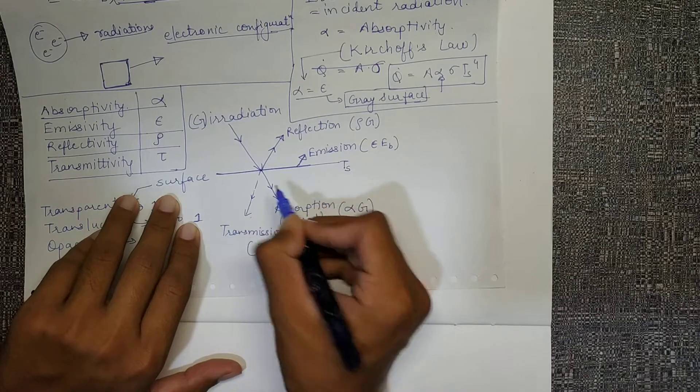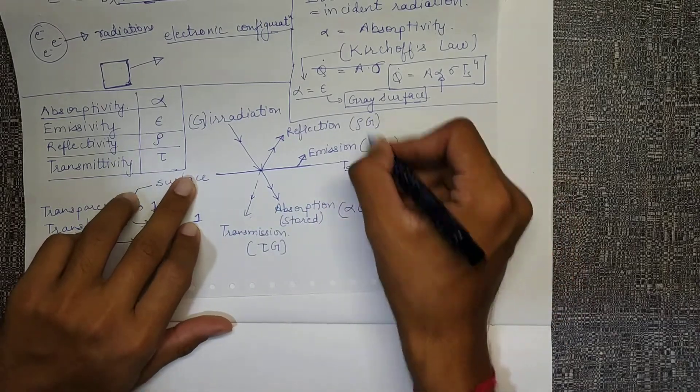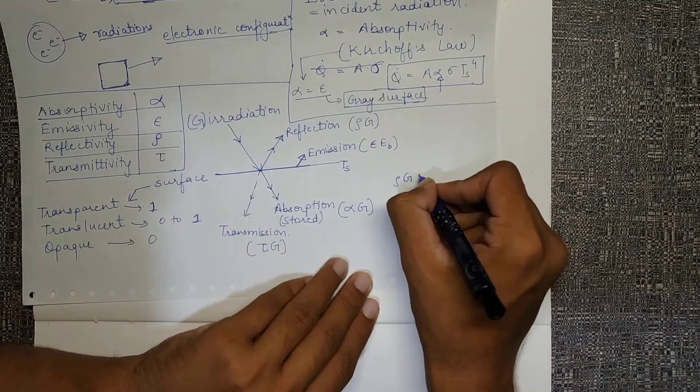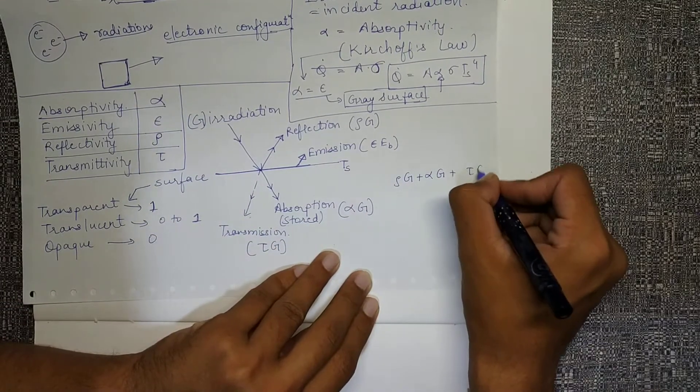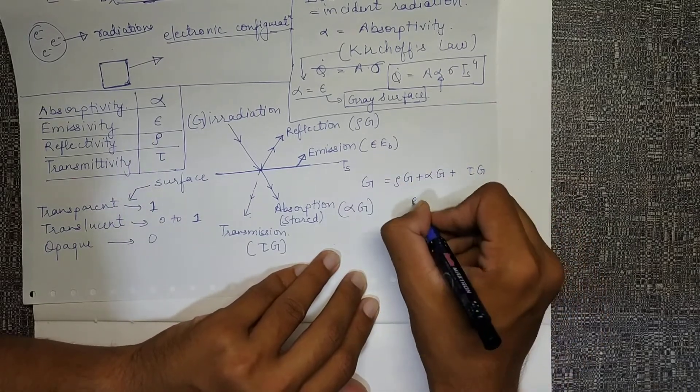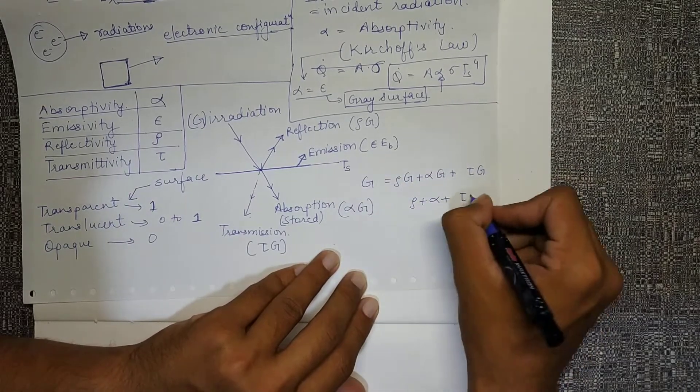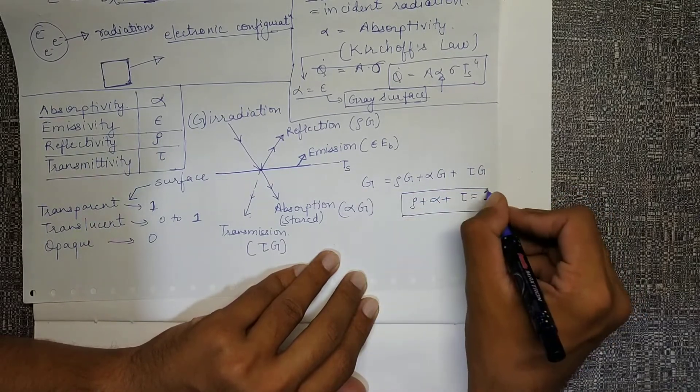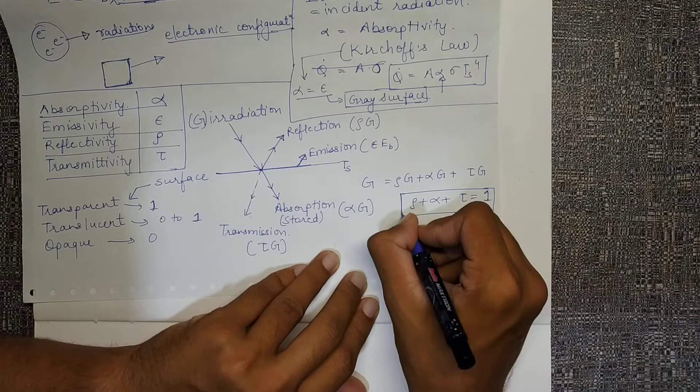Which means rho G plus alpha G plus tau G, this addition should give me the complete G value. That means rho plus alpha plus tau is equal to one, because G is the common factor, right? So this is the law, this is the formula for you.